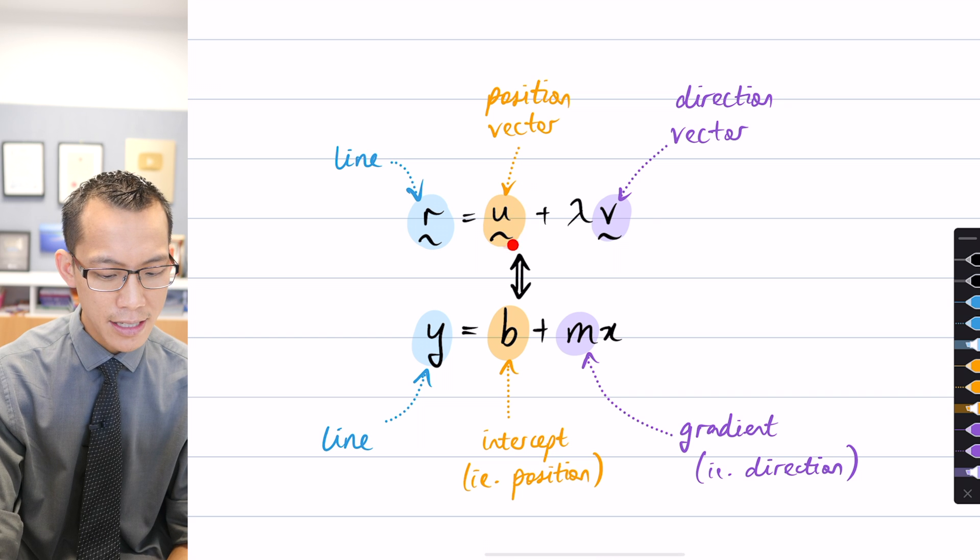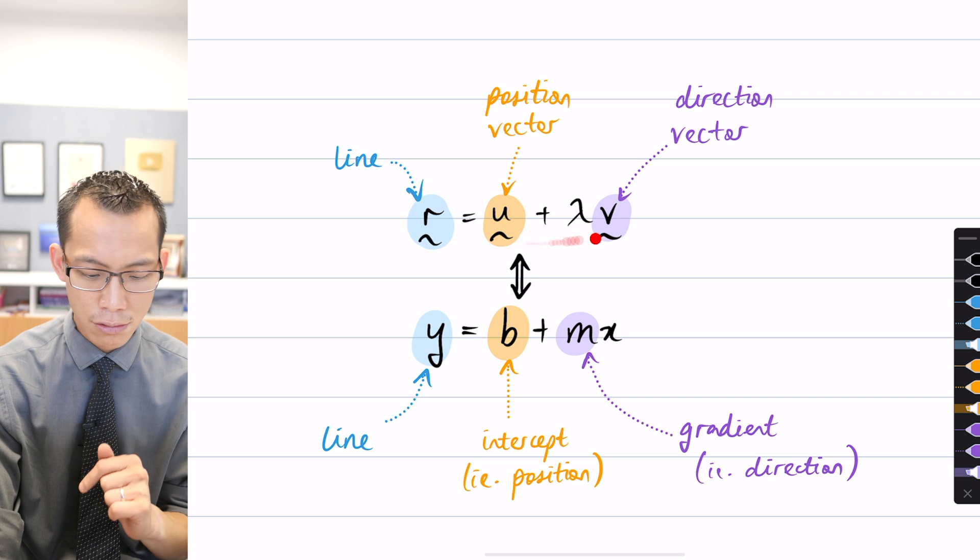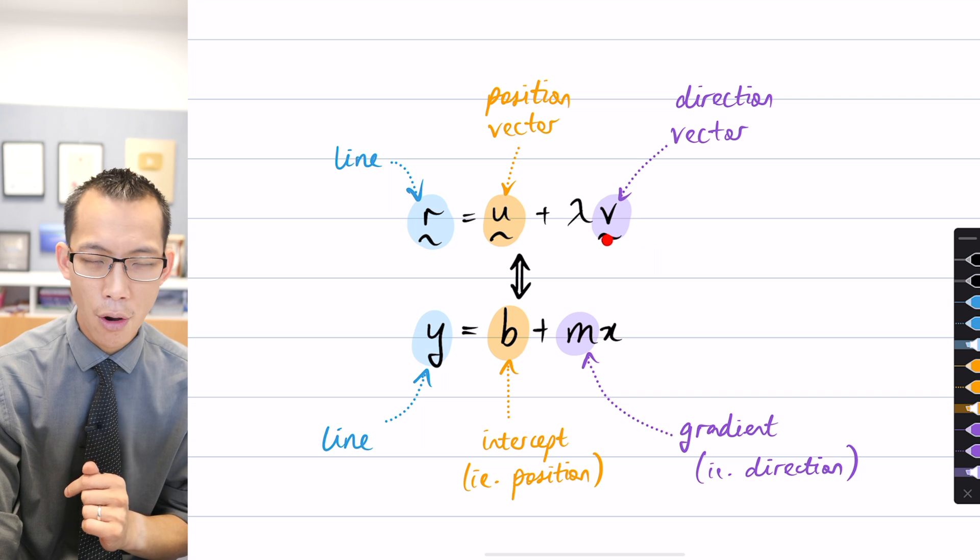Each of these really disguises three equations, right? There's an x, y, and z component in u, and an x, y, and z component in v.